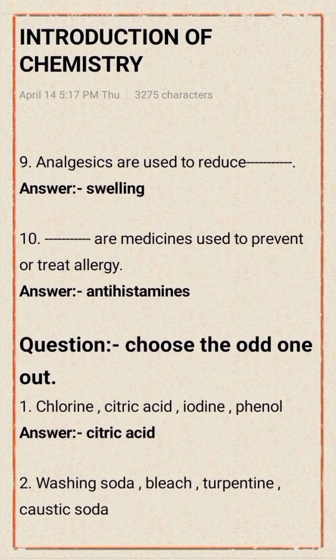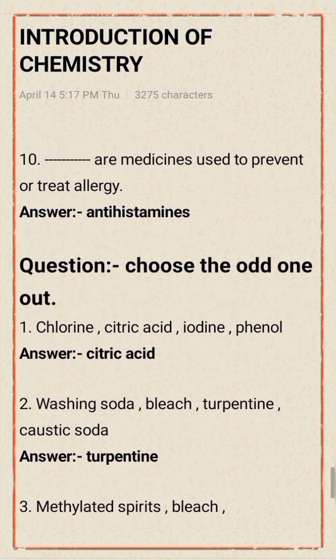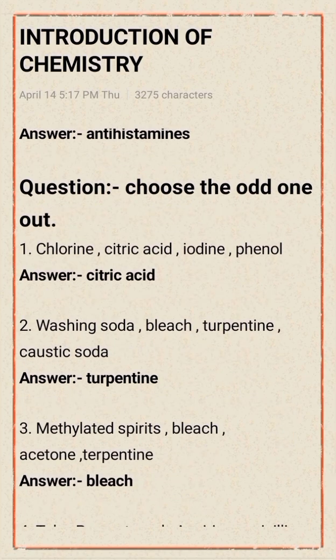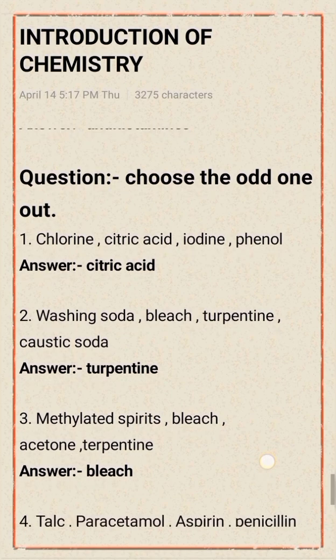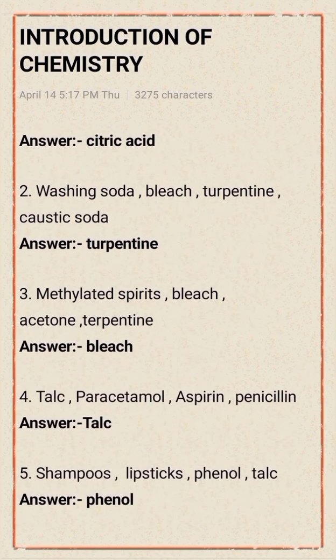Next question pattern: choose the odd one out. Number one: chlorine, citric acid, iodine, phenol — the odd one out is citric acid, as it is an acid. Number two: washing soda, bleach, turpentine, caustic soda — the odd one out is turpentine. Number three: methylated spirit, bleach, acetone, turpentine — the odd one out is bleach. Number four: talc, paracetamol, aspirin, penicillin — the odd one out is talc. Number five: shampoo, lipstick, phenol, talc — the odd one out is phenol.